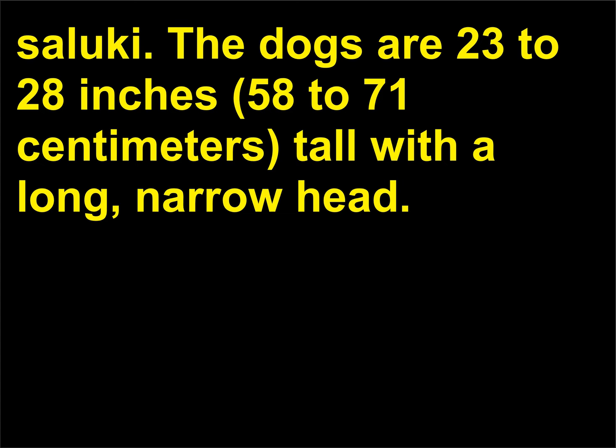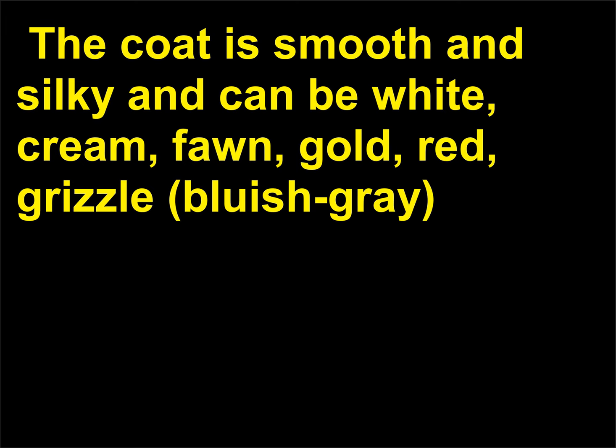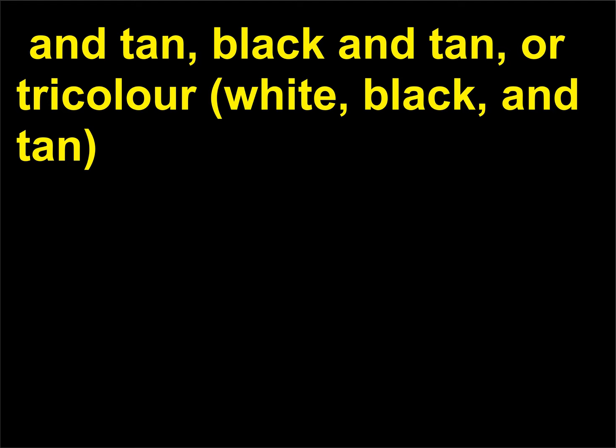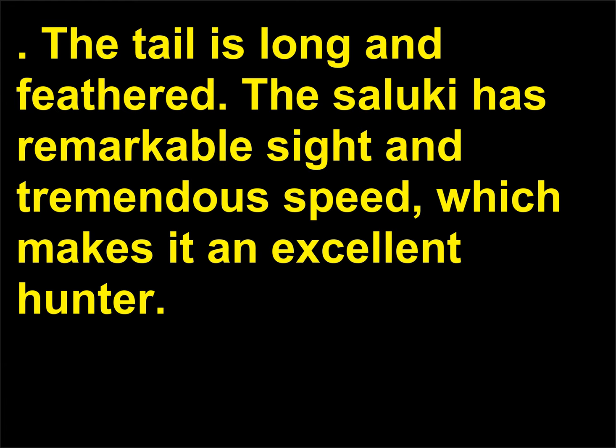The Saluki stands 23 to 28 inches (58 to 71 centimeters) tall with a long, narrow head. The coat is smooth and silky and can be white, cream, fawn, gold, red, grizzle, bluish-gray, black and tan, or tricolor. The tail is long and feathered. The Saluki has remarkable sight and tremendous speed, which makes it an excellent hunter.